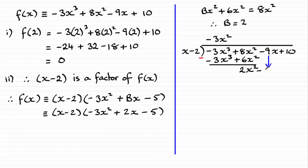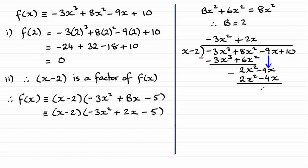We've got minus 9x there, and we start over again. What do we multiply x minus 2 by to give us 2x squared? It's got to be plus 2x. 2x times x minus 2 gives us 2x squared, making these two terms the same. And then 2x times the minus 2 gives minus 4x. Subtract again to find the remainder. These terms cancel, and we've got minus 9x minus minus 4x, which becomes minus 9x plus 4x, giving minus 5x.